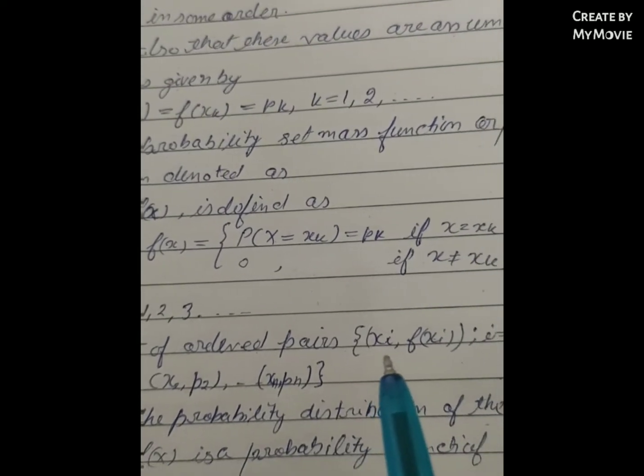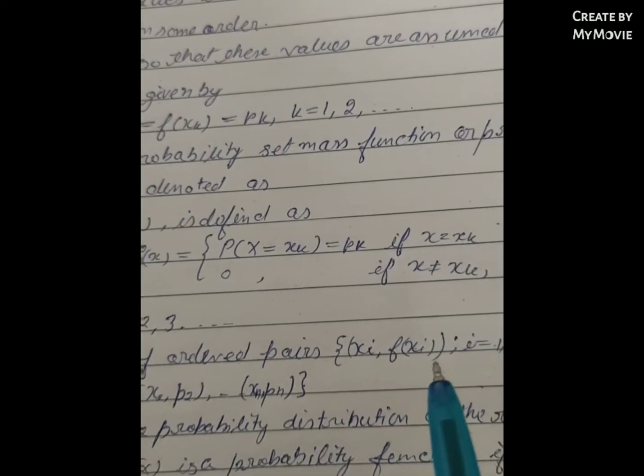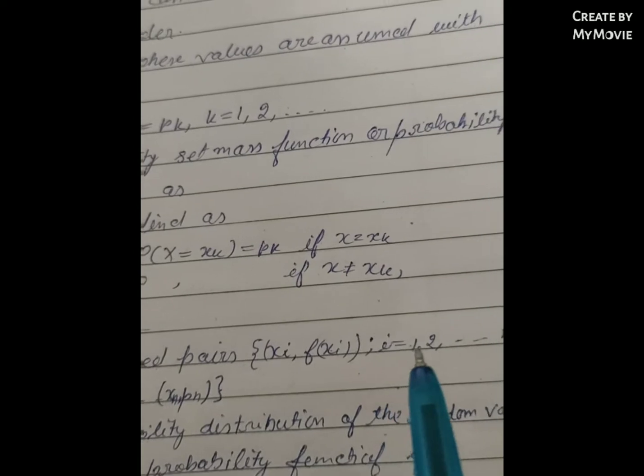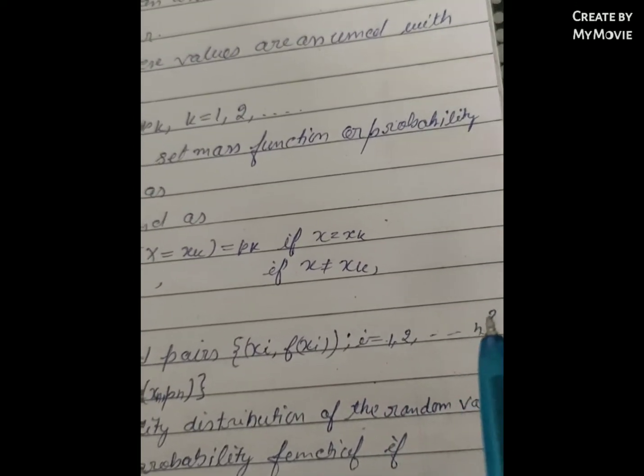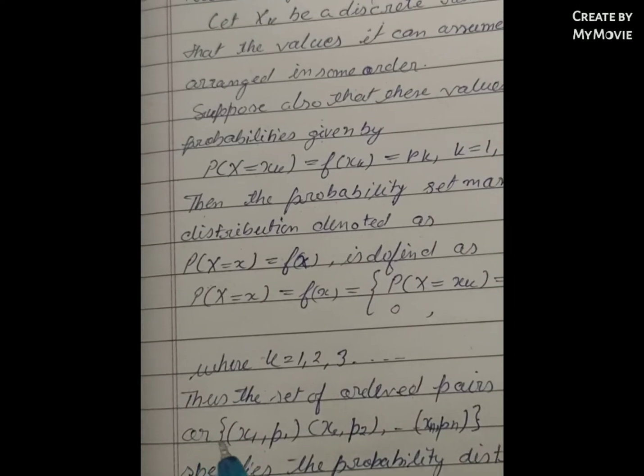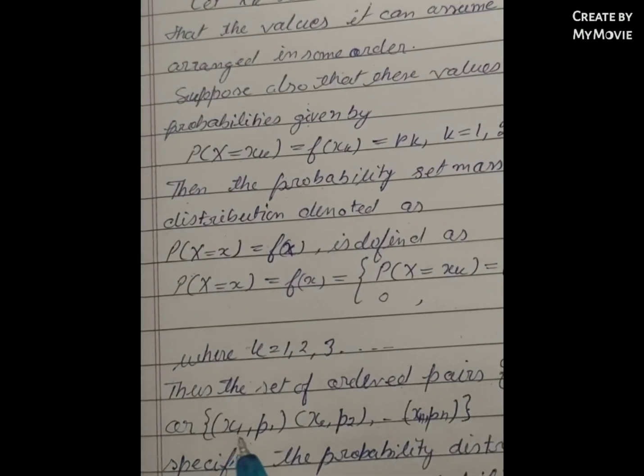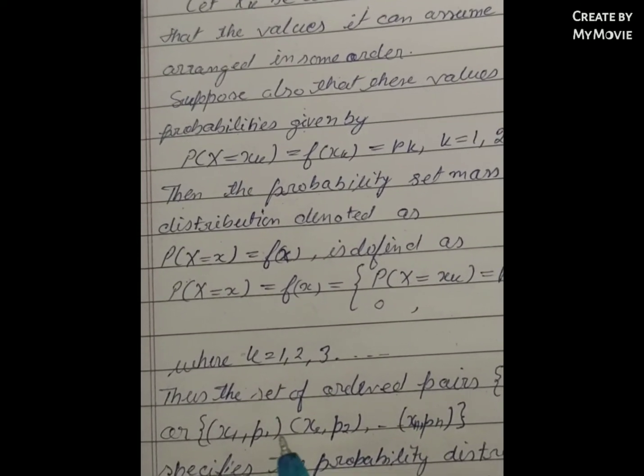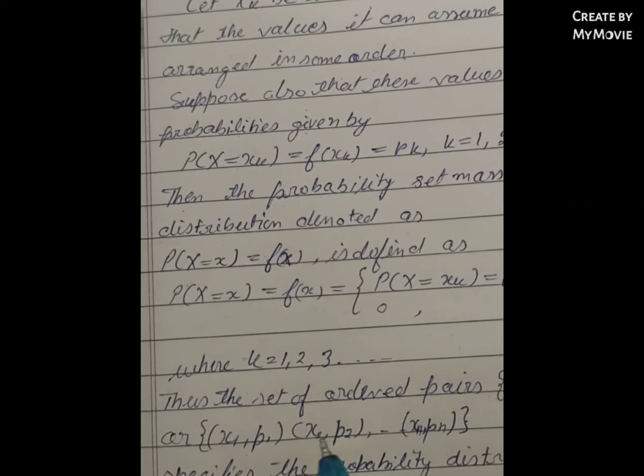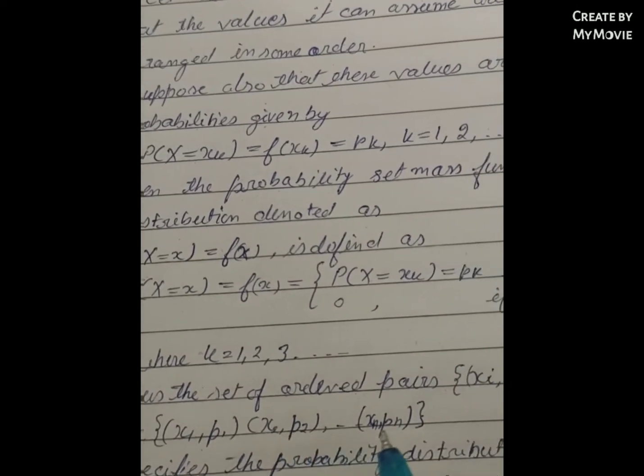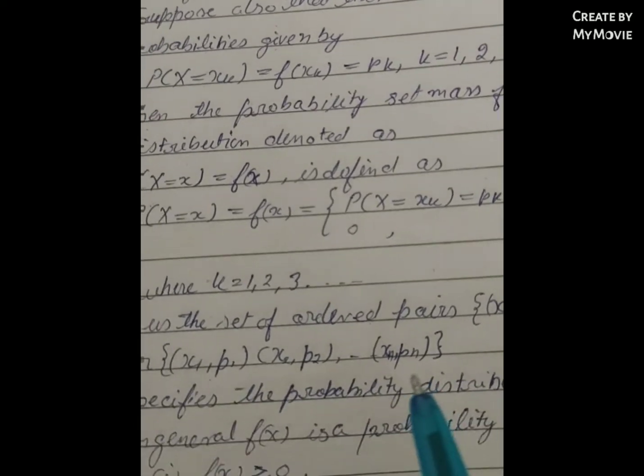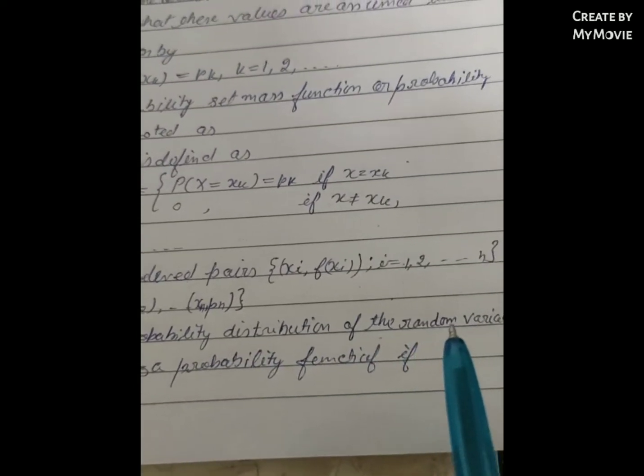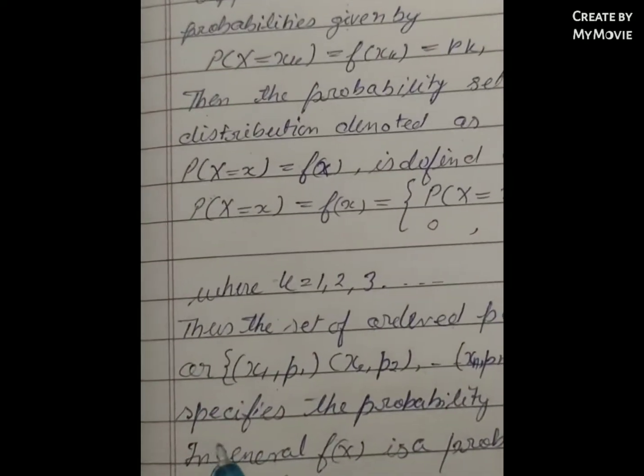(xi, f(xi)) where i equals 1, 2, 3 and so on, curly bracket close. Or {(x1, p1), (x2, p2), and so on (xn, pn)} curly bracket close. This specifies the probability distribution of the random variable X. And in general: